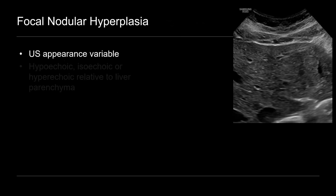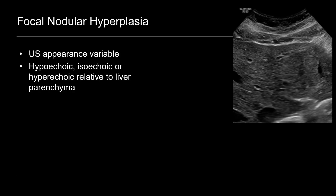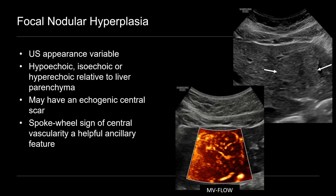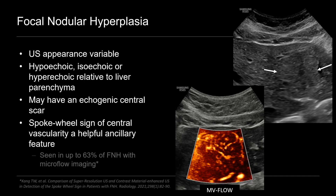And the ultrasound appearance is variable. FNH can appear hypoechoic or darker than the liver, isoechoic or similar to the liver, and even hyperechoic, brighter than the liver parenchyma. And here's a different patient with FNH. It's rather subtle, but you can see that it's slightly echogenic compared to the adjacent liver parenchyma. There may be an echogenic central scar to the lesion. And a helpful feature is the identification of the spokewheel sign of central vascularity. And just like with the last case, that's often better seen with MV flow or microflow imaging — this stellate central pattern of flow. One study showed that this is seen in up to 63% of FNH.